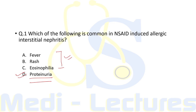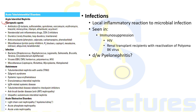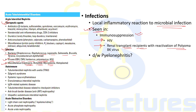Infections can also cause AIN through local inflammatory reactions. Causative bacteria include Streptococcus, Staphylococcus, Legionella, Salmonella, Brucella, and Yersinia. Viruses include Epstein-Barr, Cytomegalovirus, Hantavirus, Polyoma BK virus, and HIV. Miscellaneous organisms include Leptospira, Rickettsia, and Mycoplasma. Importantly, infections lead to AIN usually in the setting of immunosuppression, such as HIV positivity or renal transplant recipients with reactivation of Polyoma BK virus.